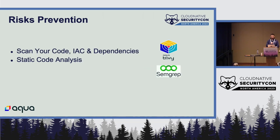You can also scan your code, infrastructure as code, and dependencies for vulnerabilities and misconfigurations — also doable with Trivy. You can also run static code analysis. Semgrep is a great tool for that, with more than 1,000 rules supporting most popular languages. It's able to detect risky code even before it gets merged into your source code — for example, detecting XSS and injection risks within your code.